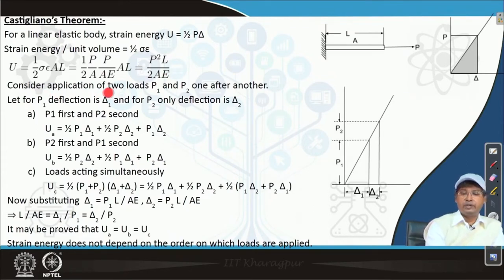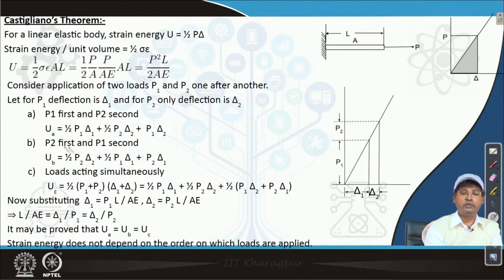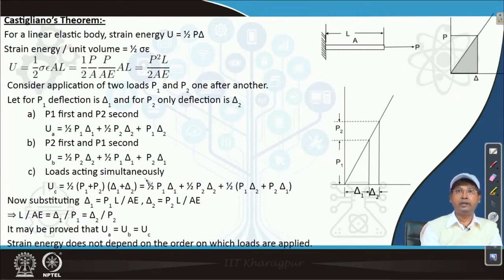If we put those values for sigma and epsilon, that gives us P squared l by 2AE. Considering the application of two loads P1 and P2 one after another, we may have three different scenarios: P1 applied first then P2, P2 applied first then P1, and both applied simultaneously. Let us see how the energy changes and what the relation is between those energies.